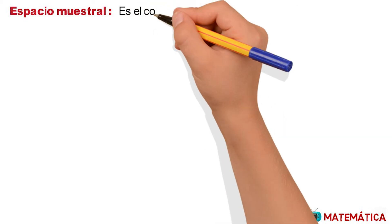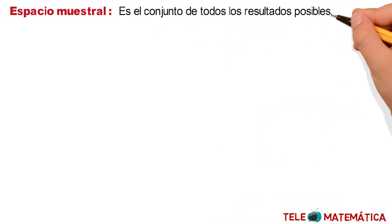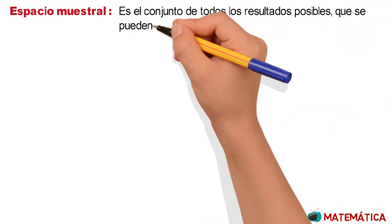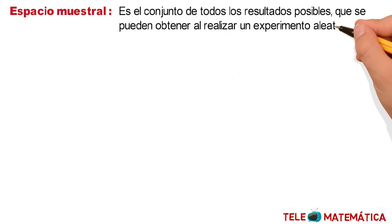To start with the video, we will remember some concepts. In first place, the sample space, which is defined as the set of all the possible results that can be obtained by doing a random experiment, and it is denoted with the letter S.